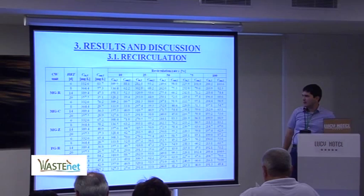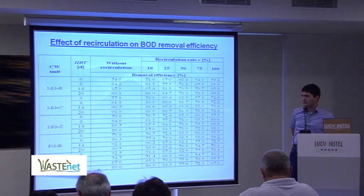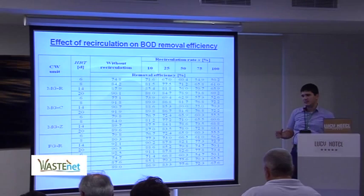An explanation for this is that the recirculated effluent increases the additional flow, and because of this it has a negative effect on the performance of the constructed wetlands — despite recirculation diluting the pollutant concentration.